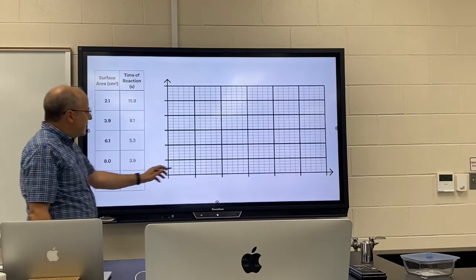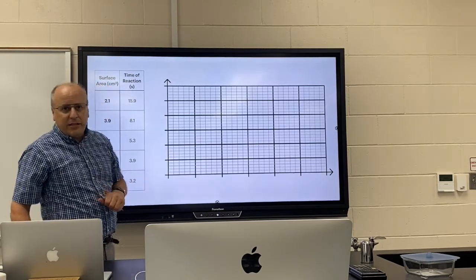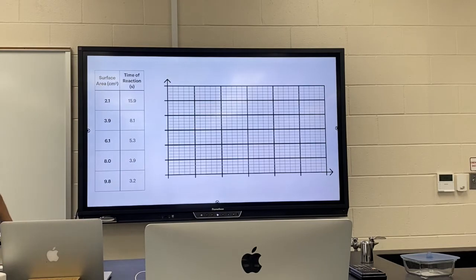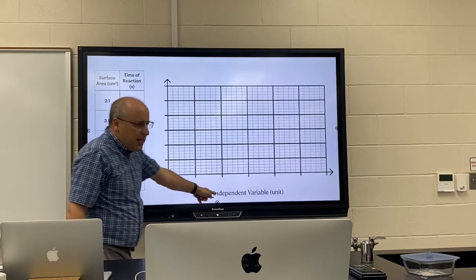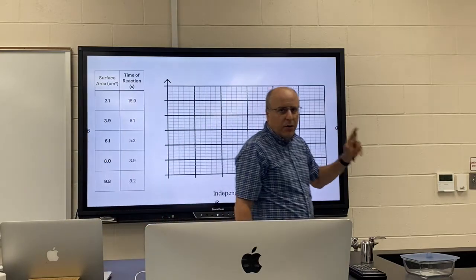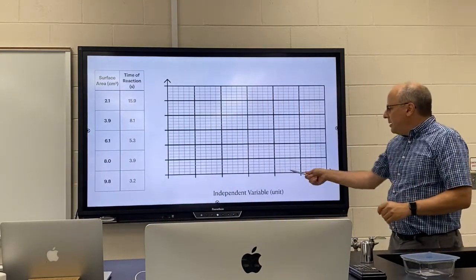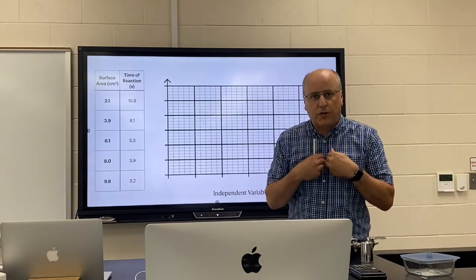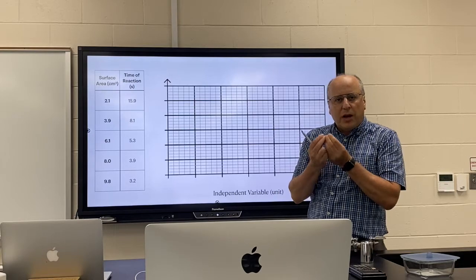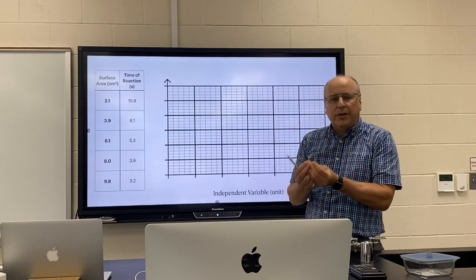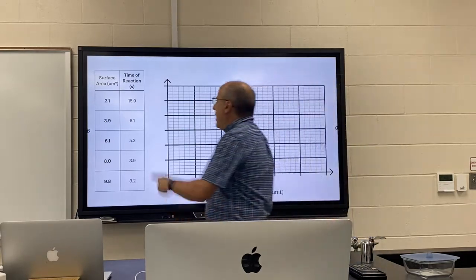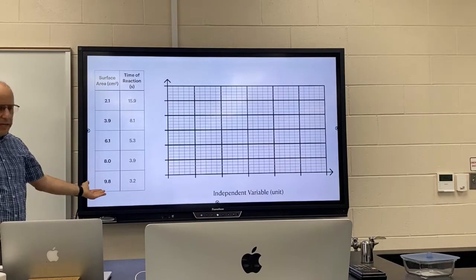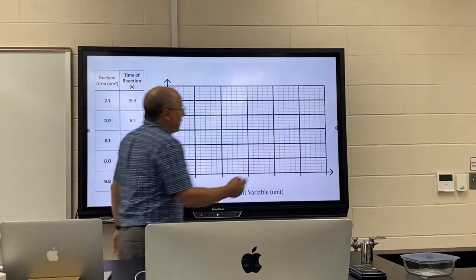The first thing we need to do is decide what's going to go on which axis, and it's not just something that you do randomly. The rule is: independent variable on the x. Independent variable refers to the variable that you controlled. What's the one of these did you consciously change during the experiment? And for us it was surface area. So surface area is going to be on the x-axis. It is our independent variable.